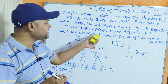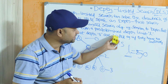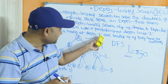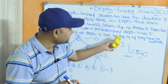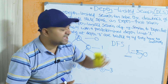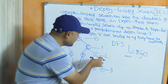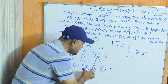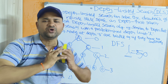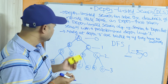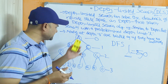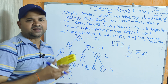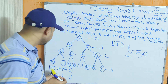Nodes at the depth limit are treated as if they have no successors. So if the depth limit is 2, even though a node has successors at level 3, we do not treat them. Now let us traverse this graph using DFS first.